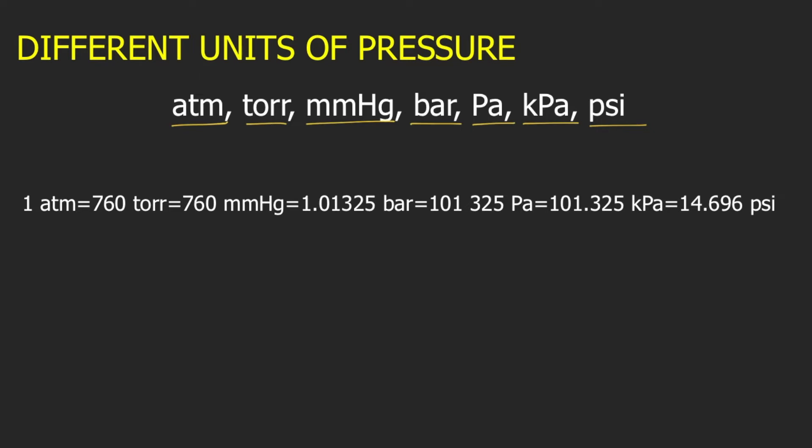Now, below, I put here the equivalents. This is very important. You need to memorize this. 1 atm is equal to 760 torr, which is equal to 760 mmHg, which is equal to 1.01325 bar, which is equal to 101,325 pascal, which is equal to 101.325 kilopascal, which is equal to 14.696 psi. So this right here, you need to memorize this. In case this is not given in your exam, you need to memorize these equivalents.